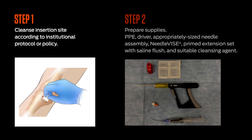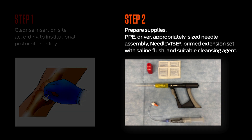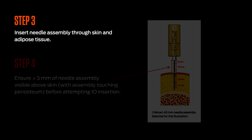Now let's discuss each insertion step in detail. Step 1: Clean the insertion site according to institutional protocol or policy. Step 2: Prepare supplies — don PPE, prime your infusion set, attach the needle assembly to the driver. It's important not to touch or contaminate the uncapped sterile components of the needle assembly. It's also important to control any patient movement prior to or during the procedure. Step 3: Insert the needle assembly through the skin and adipose tissue.